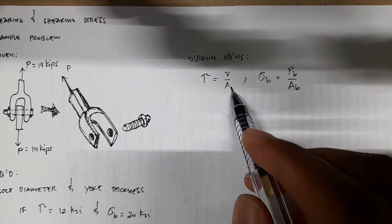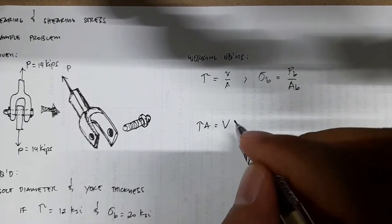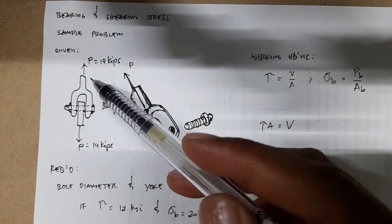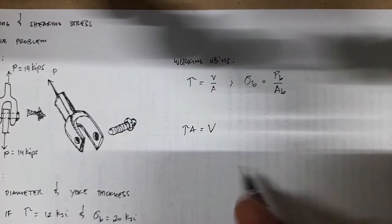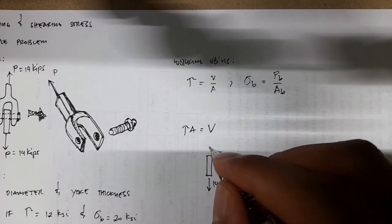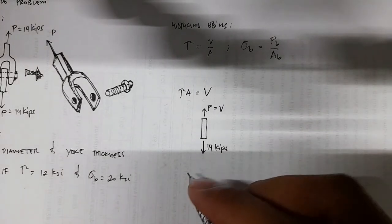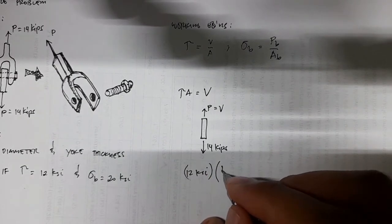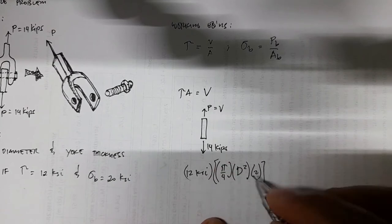So tau times A equals V. Our V here is just equal to 14 kips, from summation of forces along the y-axis. We have P equals V, so V equals 14 kips. Tau is limited to 12 ksi. The area is pi over 4 times d squared, times 2, because we have two shear areas.